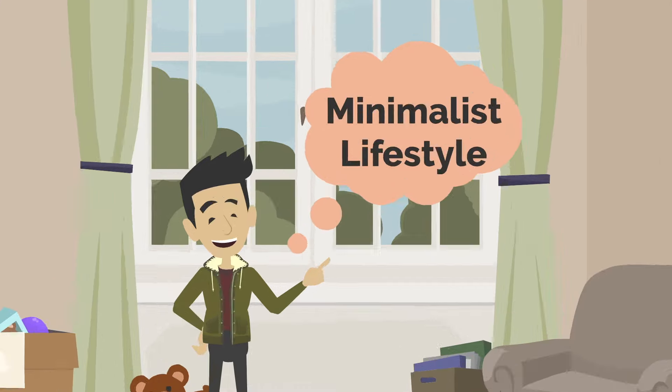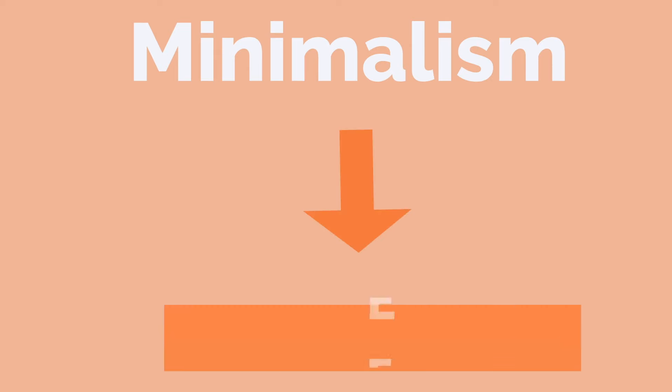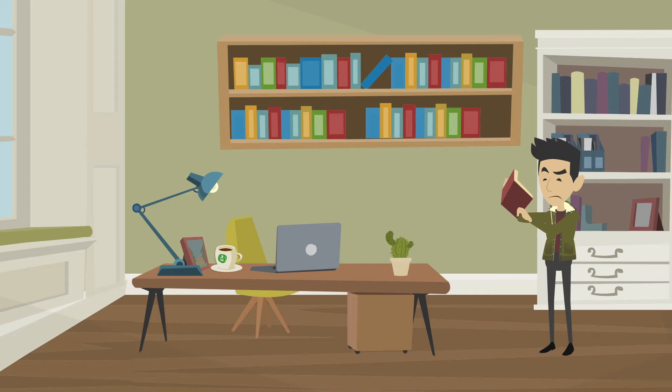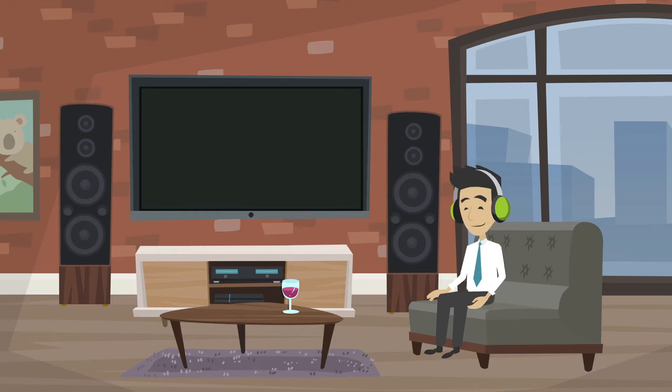First of all, minimalism is not about having only 10 items, but rather to keep only what you really care about. If you have a big library of books, that doesn't mean you have to throw it out if you still enjoy having a big collection of books, or even music albums and movies.